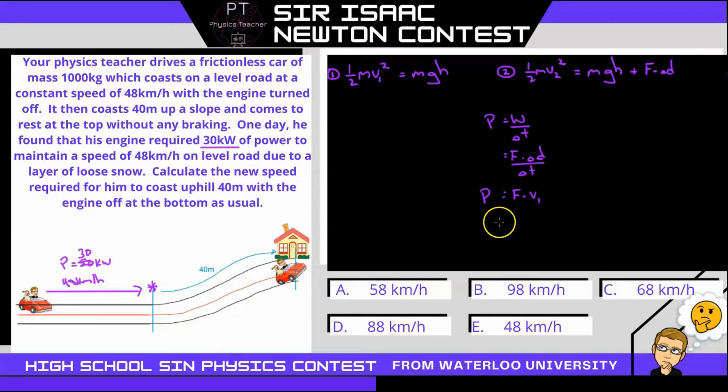I can rearrange this equation to solve for that retarding force: f equals power over v1. I can substitute that into equation two, so we had one half m v2 squared equals mgh plus that force I'm going to rewrite as power over v1 times displacement. I can also substitute equation one for this gravitational potential energy as the kinetic energy from one.